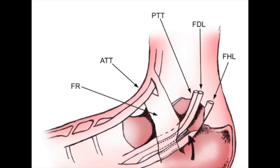A quick anatomical review: we've got four main structures for this injection that we're going to visualize under ultrasound. The posterior tibial tendon, or PTT; the FDL, or flexor digitorum longus; and more posterior to that is the FHL, flexor hallucis longus. Between the FDL and FHL, you will visualize the tibial artery and nerve running between those two structures.